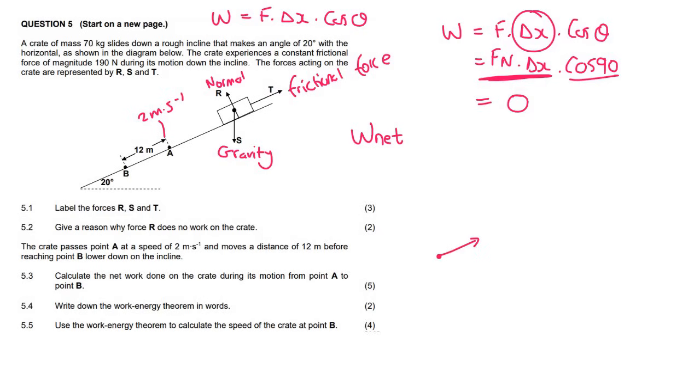So we've got a frictional force. We've got a normal force. Gravity perpendicular. And gravity parallel. And then what did they tell us about friction? Oh, they did give us the friction of 190 newtons. Okay. So the forces that we would have to consider for W net would be these ones over here.